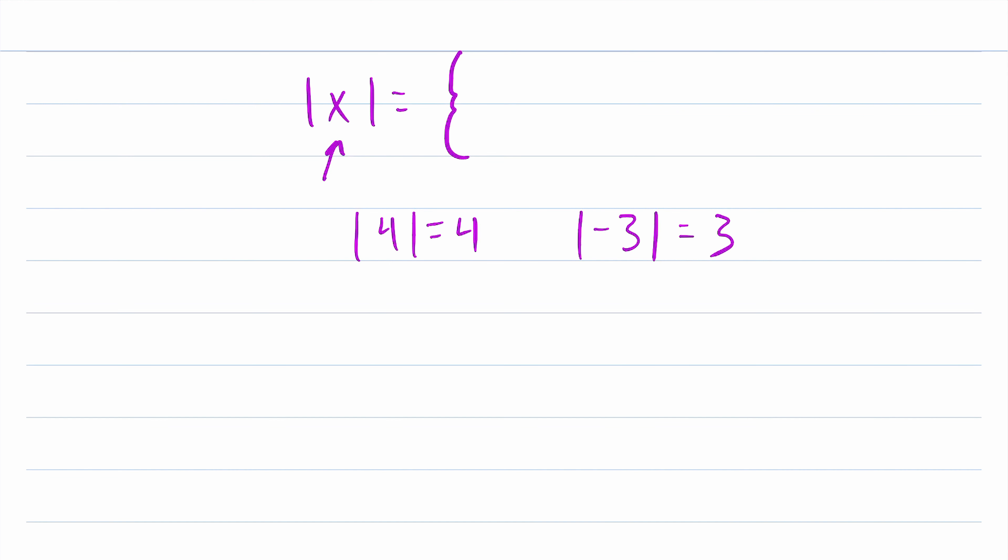It tells us a number's distance from 0. And this is actually a piecewise function. Because if we input a negative number into the absolute value, so if x is less than 0, then the absolute value flips the sign of the number that we input. So it outputs negative x. For example, when we input negative 3, since negative 3 is less than 0, the absolute value function multiplies it by negative 1 in order to flip its sign. Negative 3 multiplied by negative 1 is, of course, positive 3.